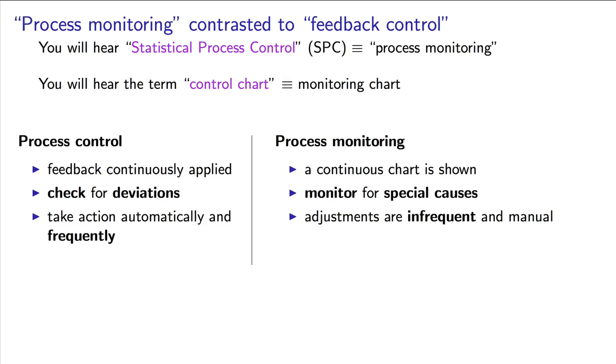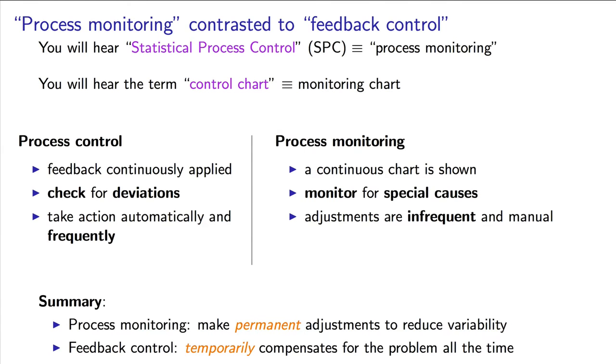Firstly, process monitoring is not applied automatically. Adjustments should be made to the process infrequently, and only when we see evidence for it in the control charts. When we say that something different, a special cause, has occurred. Action from a process monitoring chart is taken manually. Feedback control is very different. Feedback control is a temporary measure that is taken in an automated way when a deviation is detected.